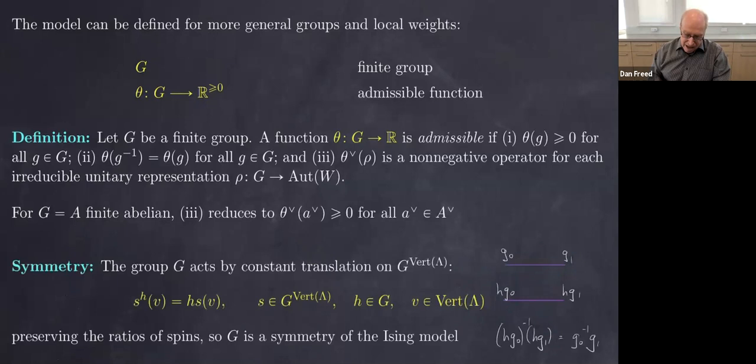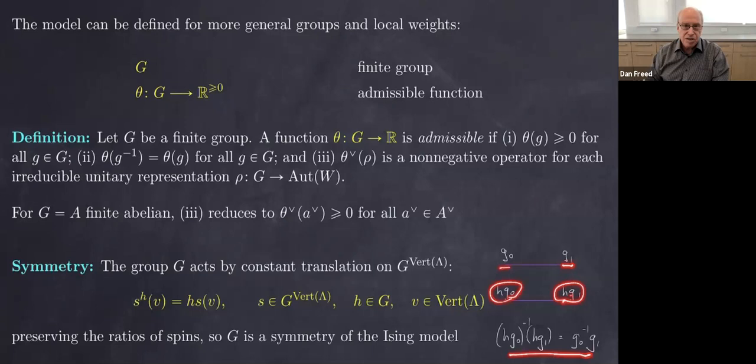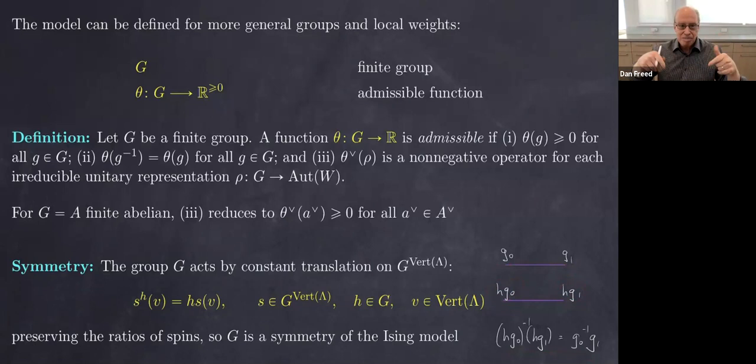Here's the symmetry, which is the important feature. It's very simple to see: the partition function depends only on the ratios at each edge, so if I take each group element at a vertex and multiply it on the left by a constant element of the group, the ratio doesn't change. Multiplying all spins uniformly by a constant group element is a symmetry. In the original picture of spin up and spin down, it means flipping all arrows — that's the symmetry of the model we'll eventually exploit.